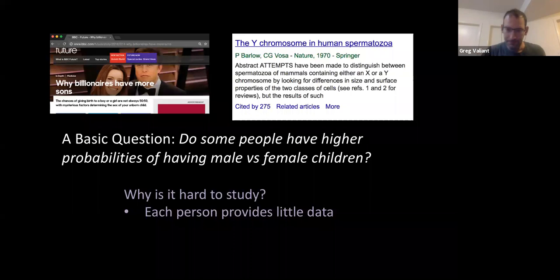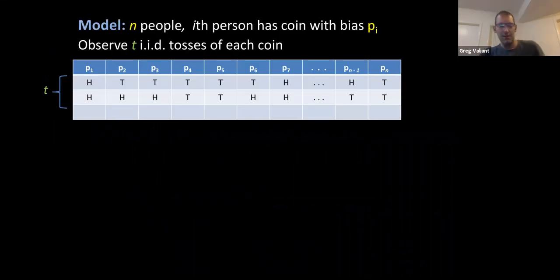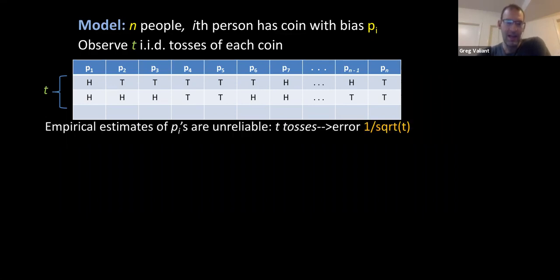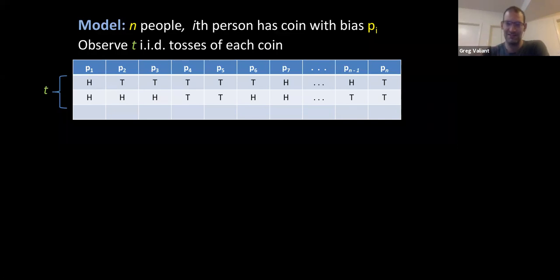I'm going to present results in the setting of trying to understand the sex ratio, though the results apply more generally. Consider the following clean model: suppose we have n people in our population, each person has a hidden coin, and the i-th person has a coin with a bias of p sub i. We observe t tosses of each coin, and our goal is to estimate the set of p_i's — or equivalently, the distribution or histogram of the p sub i's.